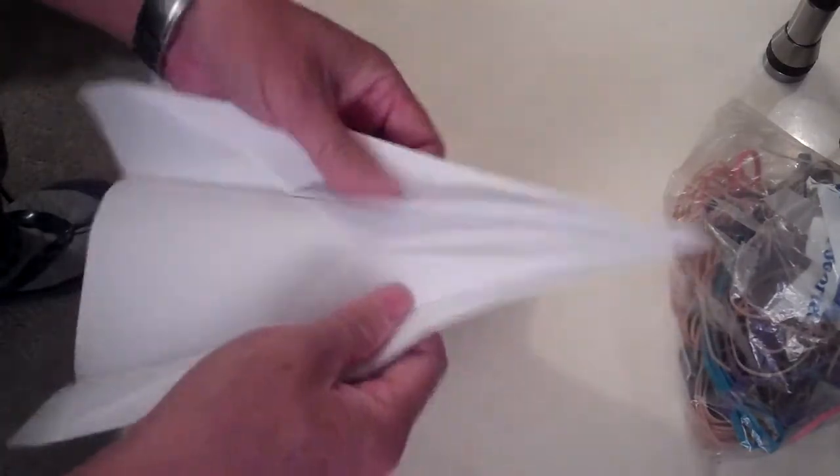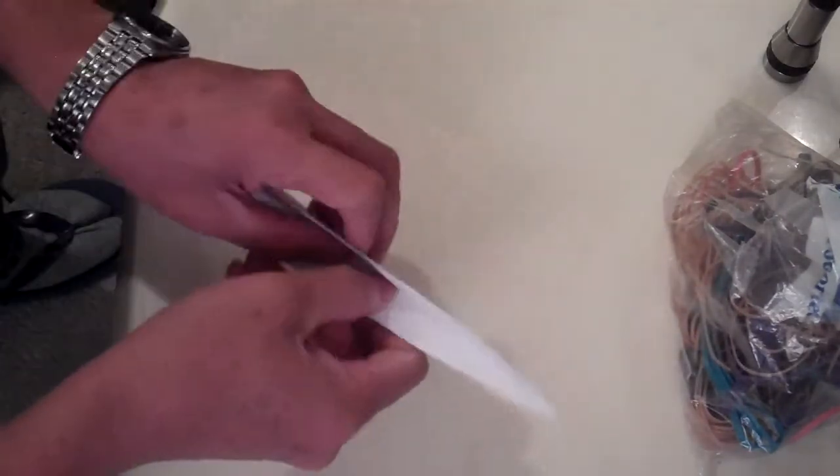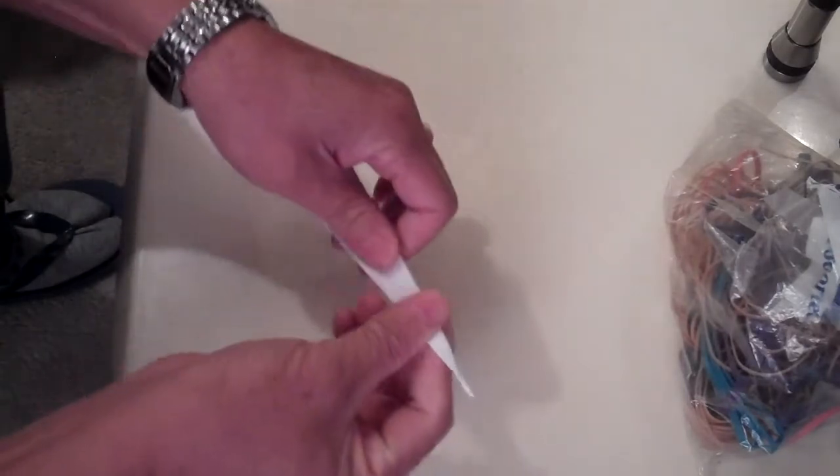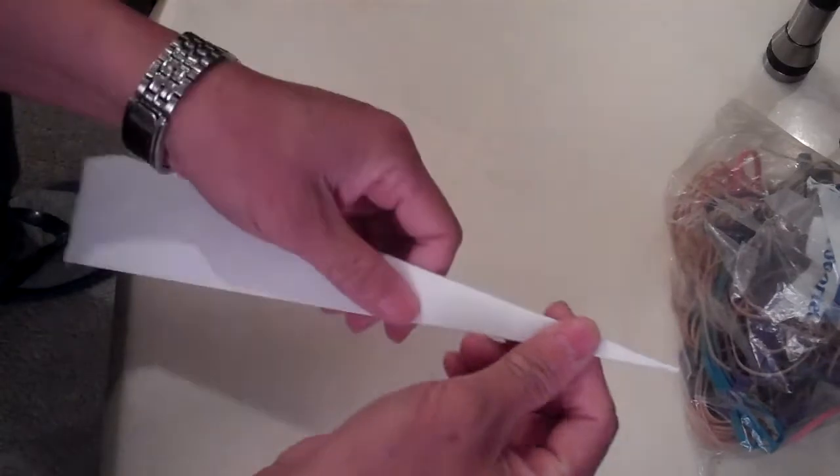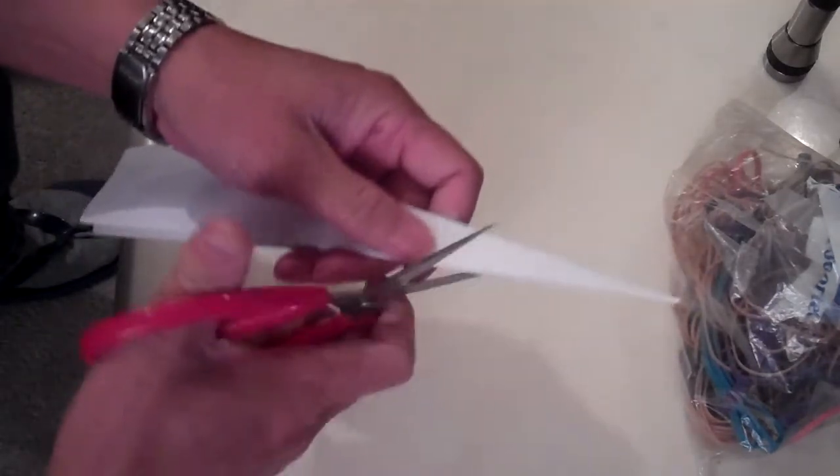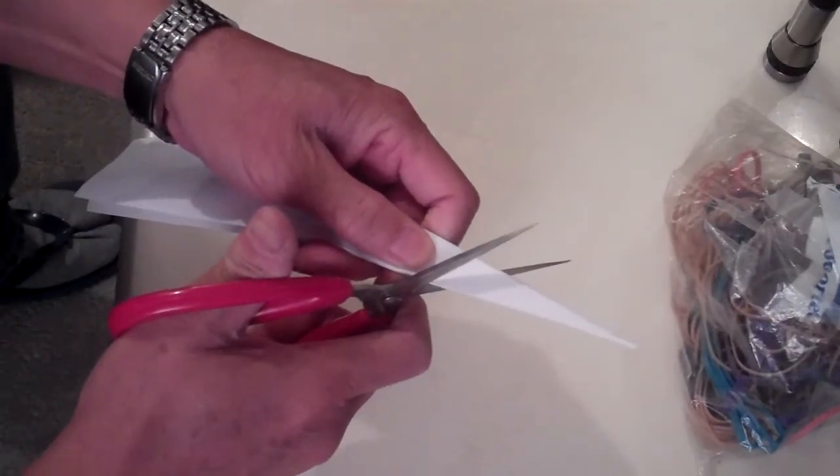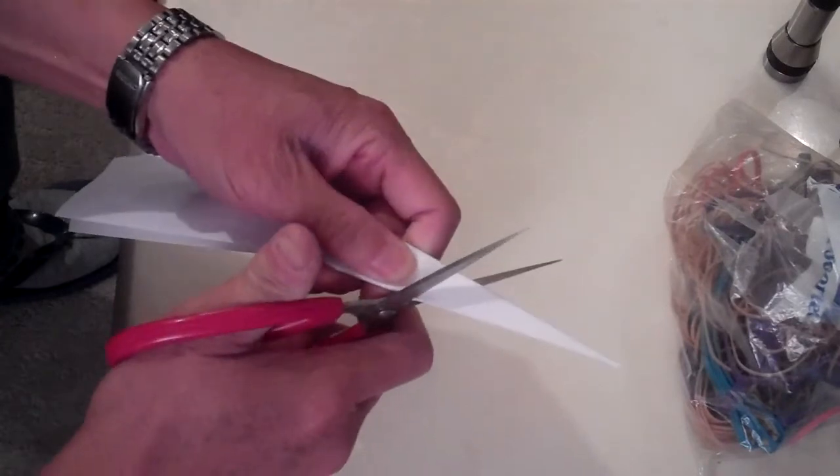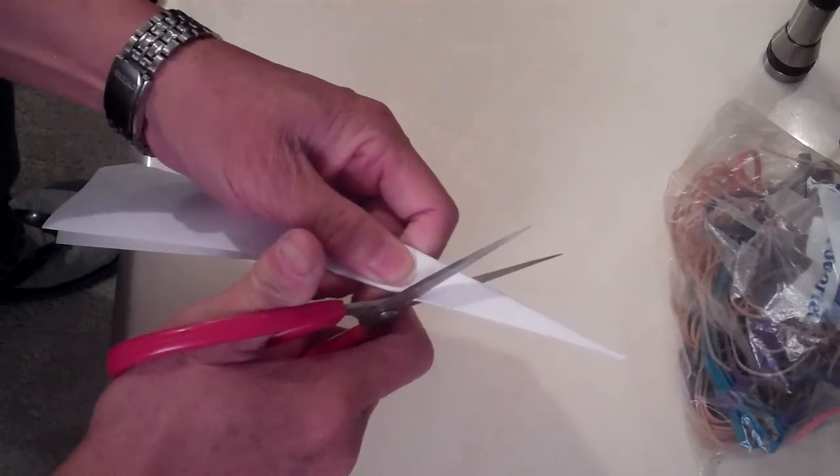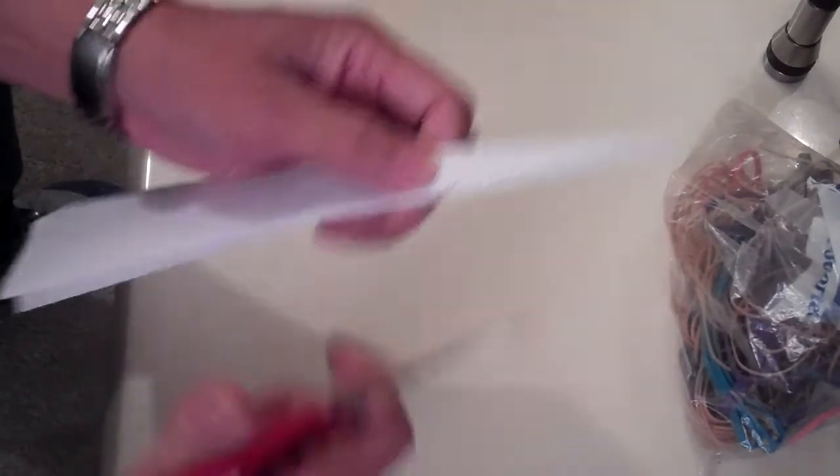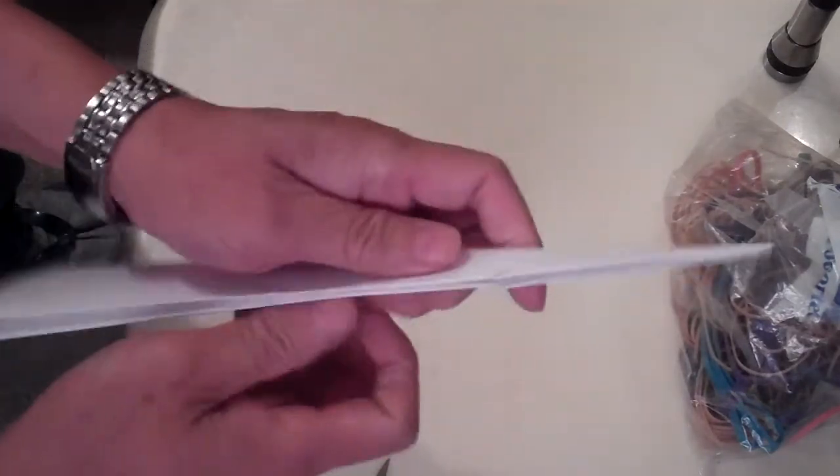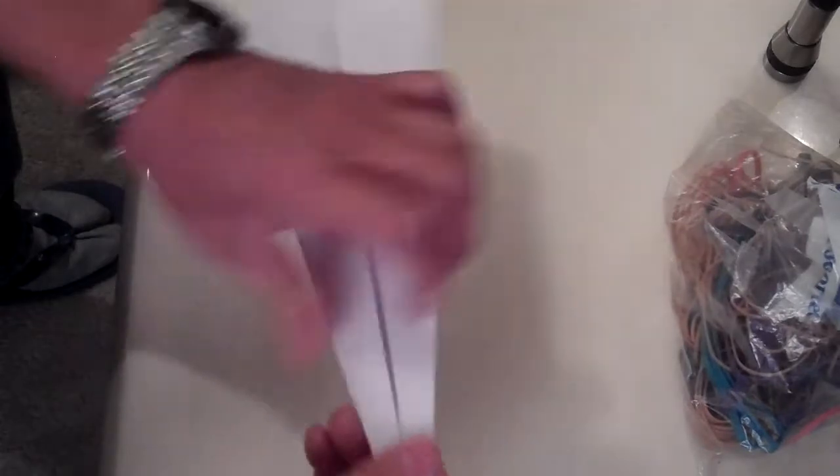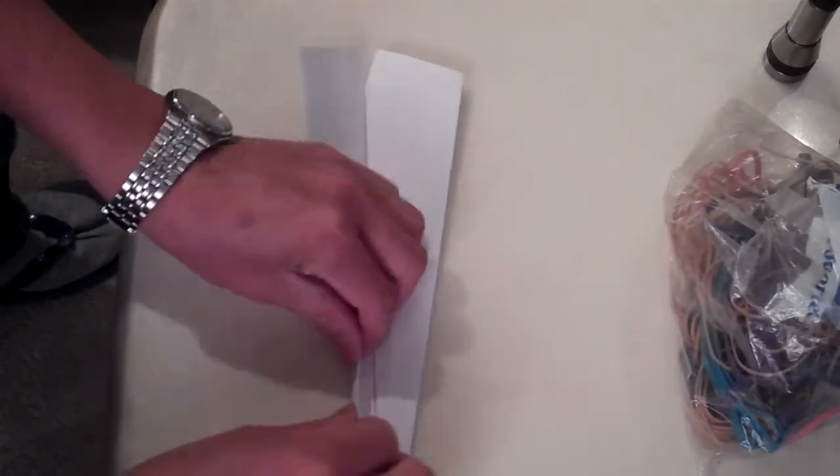Fold it all together and then you make something that looks like this. Now you take a pair of scissors and cut a little slit in here. Then you open it back up.